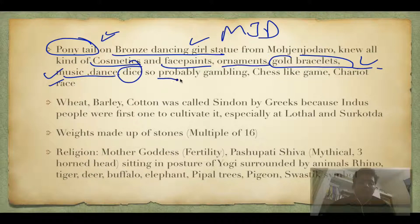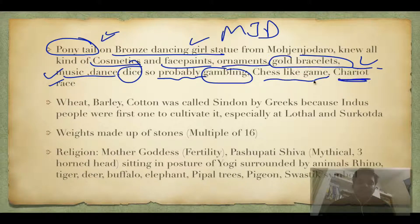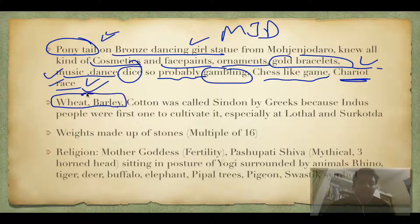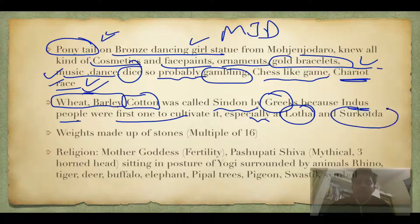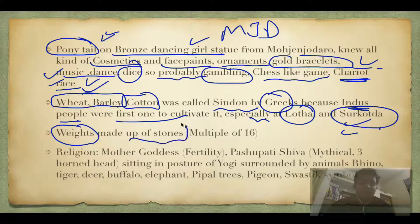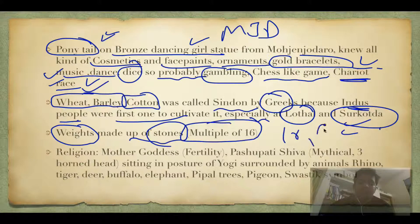Gold bracelets and other ornaments were available. Music and dance were popular. Dice was found in Harappa, suggesting gambling. A chess-like game was present, and chariots suggest racing. Wheat and barley were cultivated. Importantly, cotton was called 'Sindon' by Greeks because Indus people were the first to cultivate it — especially at Lothal and Surkotada. Weights were made of stone and were in multiples of sixteen — 16, 32, etc.